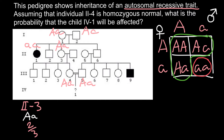According to the problem, individual 2,4 — her husband — is homozygous normal, so we assign him the genotype AA. Now, knowing the genotypes of these individuals, let's find the probability for their daughter to be a carrier or heterozygous.